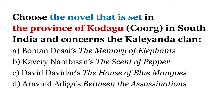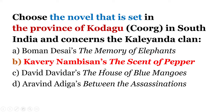Next. Choose the novel that is set in the province of Kodagu (Kurg) in South India and concerns the Kaleyanda clan. Option A: Boman Desai's The Memory of Elephants. B: Cauvery Numbisen's The Scent of Pepper. C: David Dawes' The House of Blue Mangoes. D: Arvind Adiga's Between the Assassinations. You can eliminate certain options — Kodagu is a hill station in South India. 'Between the Assassinations' doesn't fit the setting. Answer: B, Cauvery Numbisen's The Scent of Pepper.